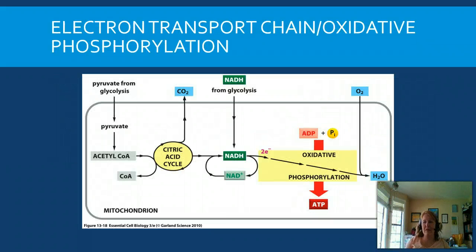We've talked about this a lot, and every time you've learned this in your previous classes, we've followed it up by talking about the electron transport chain and oxidative phosphorylation. This content we're actually going to talk about in the next chapter. So for now, just be aware that the NADH and FADH2 are going to go to the electron transport chain so that they can be shuffled back.